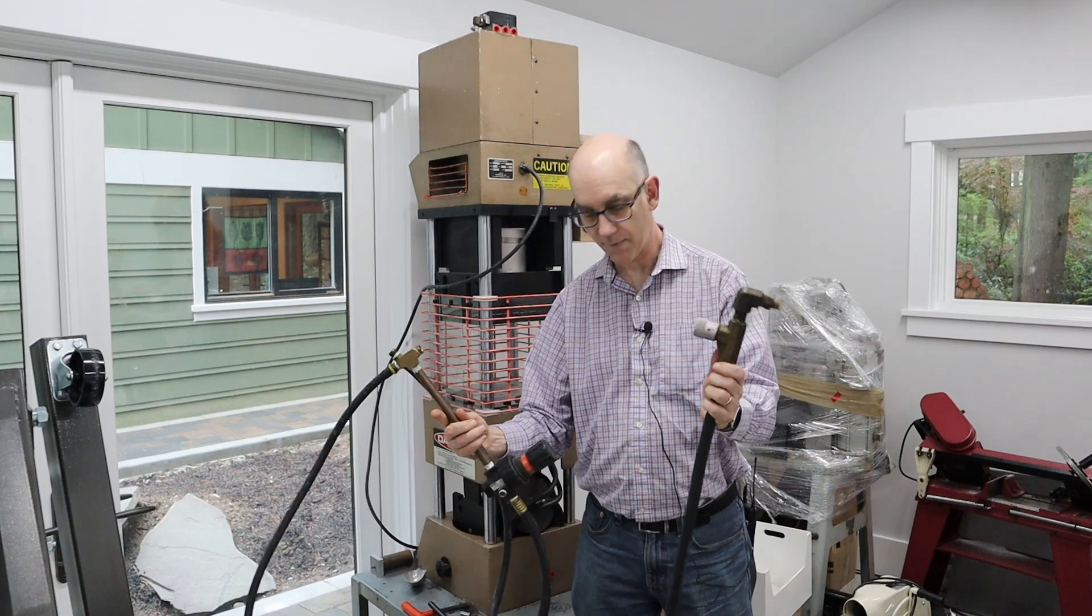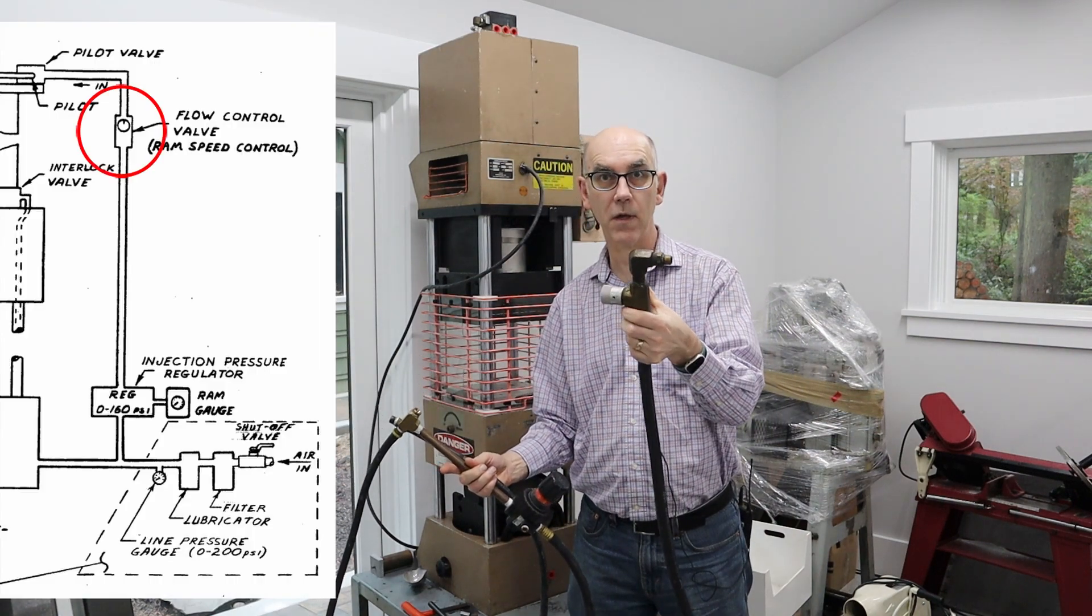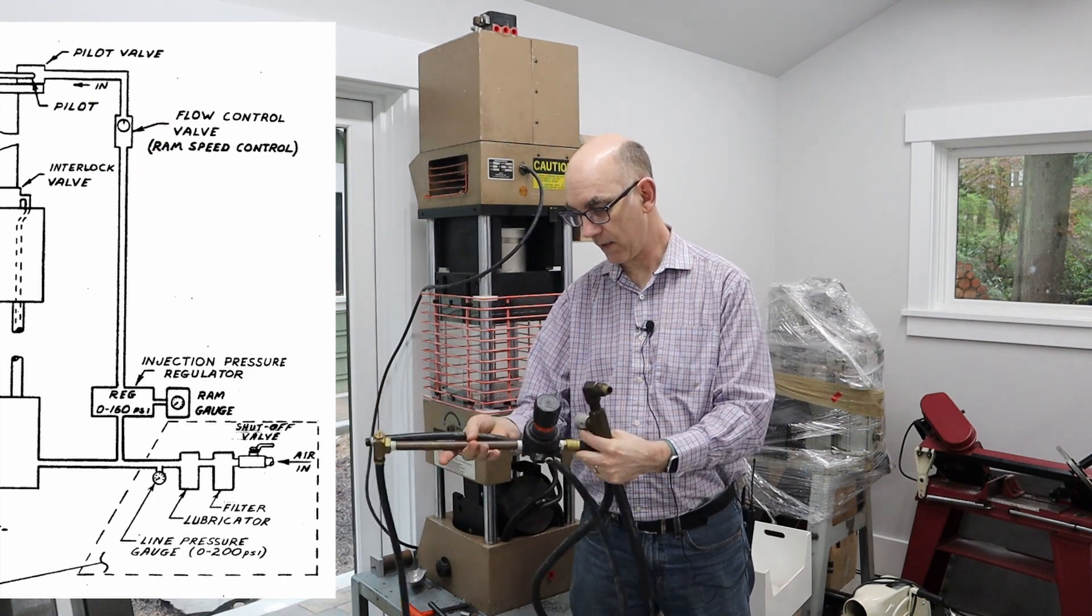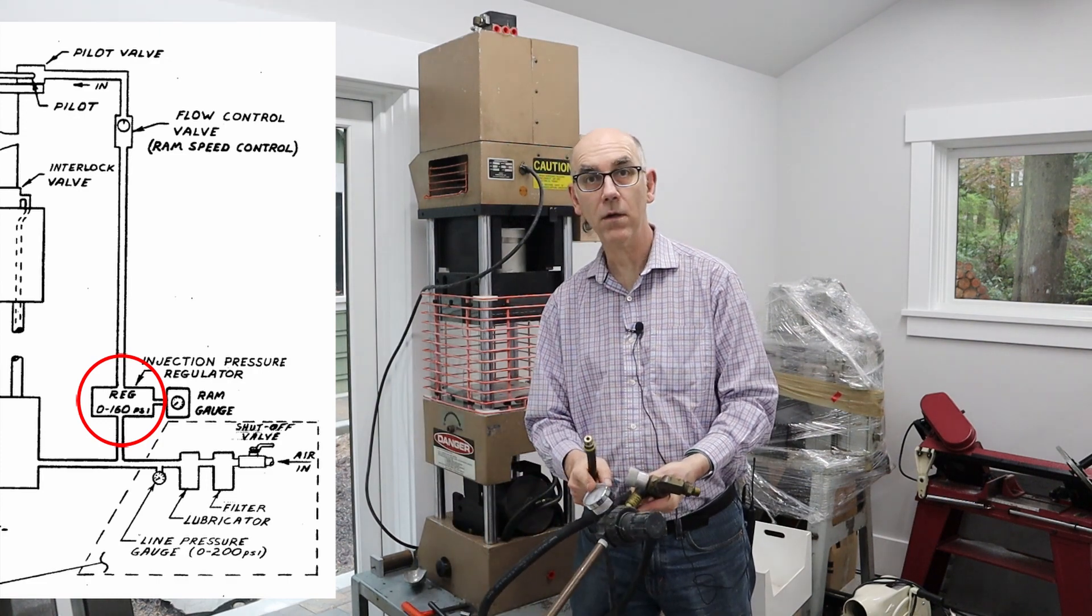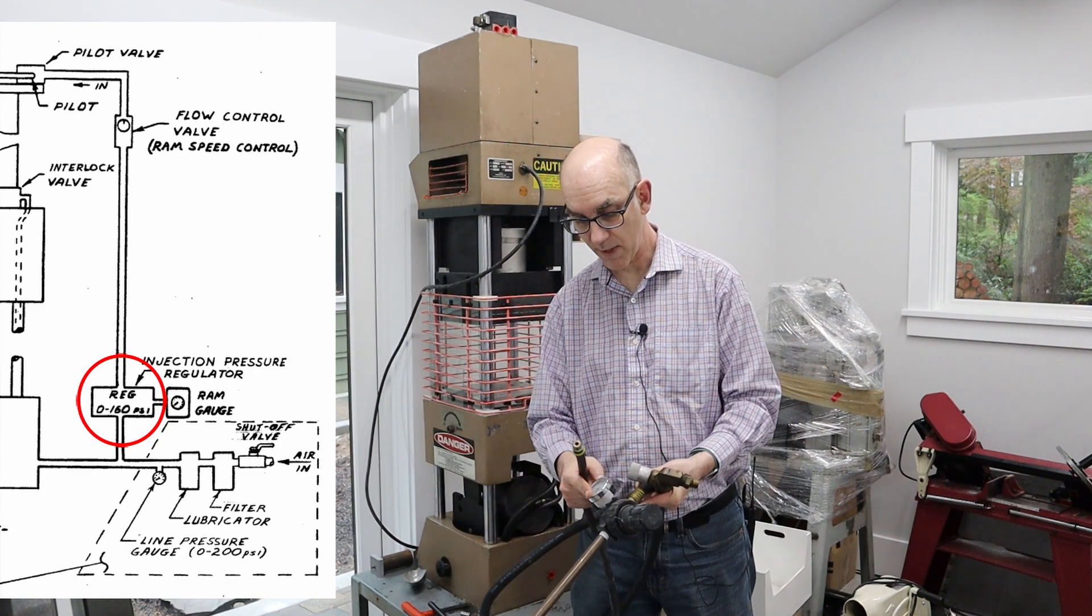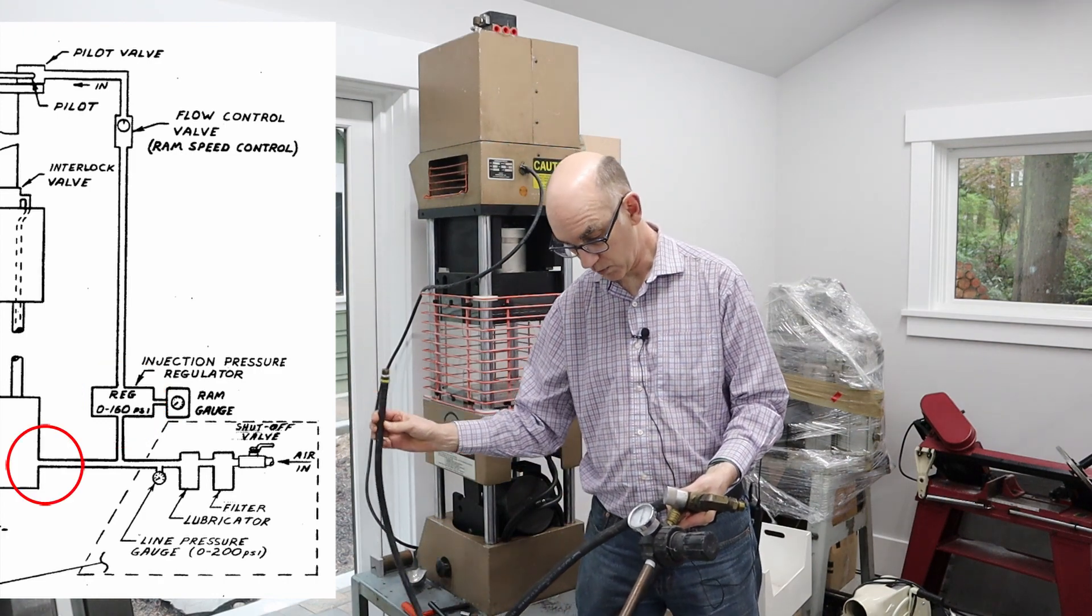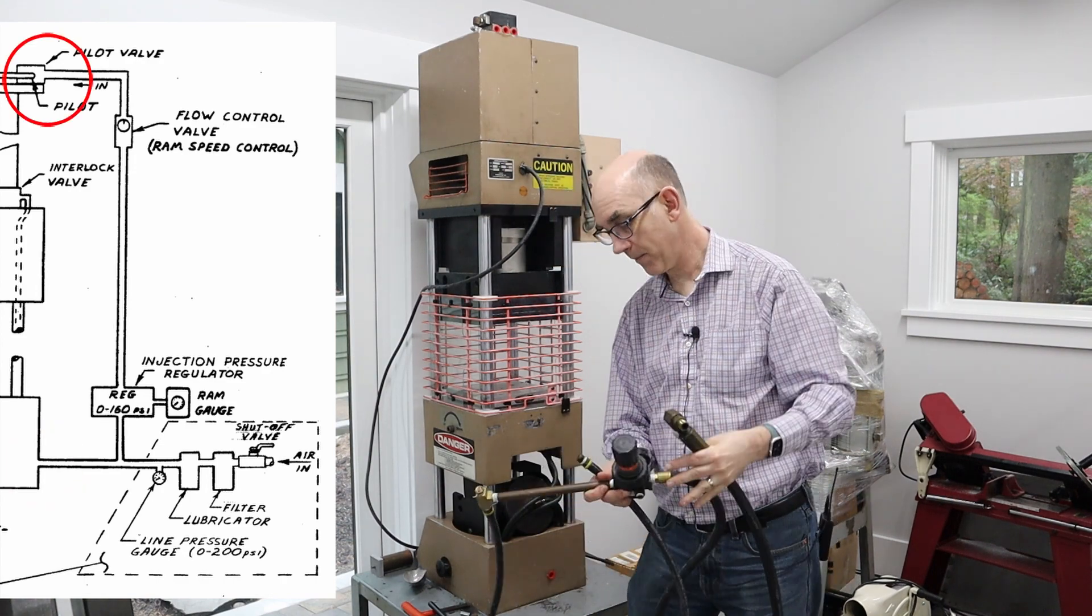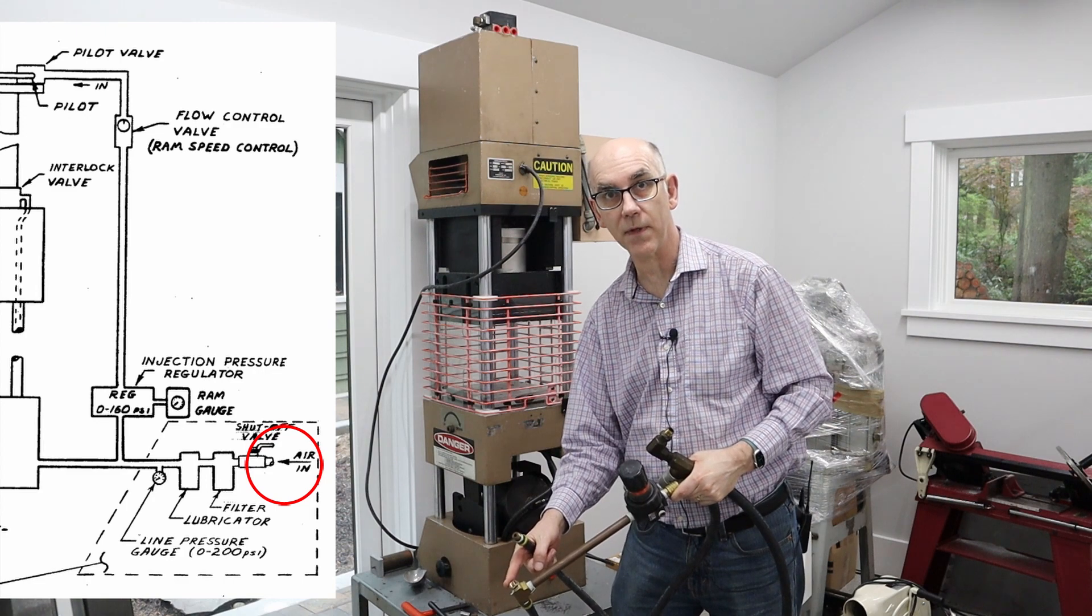This is part of an optional kit. This is a flow regulator so that you can control the speed of the piston when it's injecting. And then this is a pressure regulator for the RAM because the RAM has a maximum of 160 psi. This goes to the connection down here. So this is going to go to the connection up there.